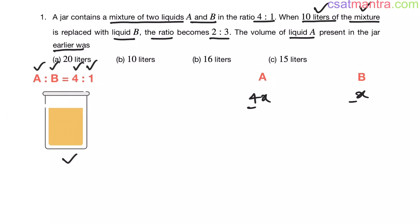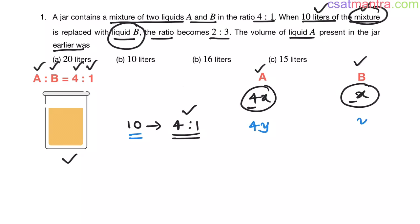Now, 10 liters of mixture is taken out and it is replaced with liquid B. Tell me in this 10 liters, what will be the ratio of liquid A and B? It would be same, right? Because it is the same mixture. We are not talking about absolute quantities. We are talking about ratios. So, ratio is going to be same.